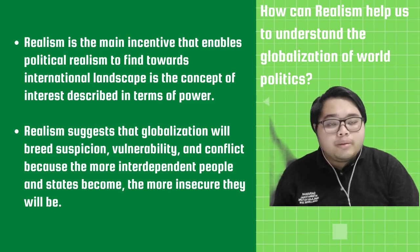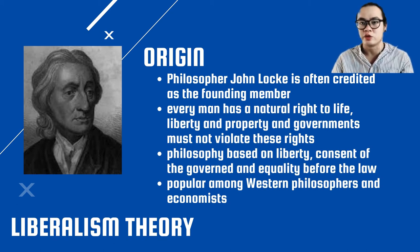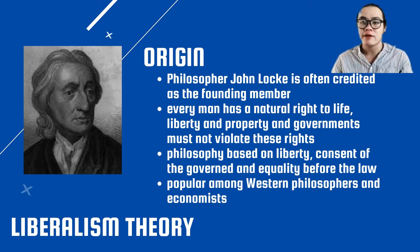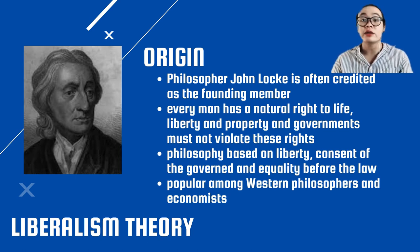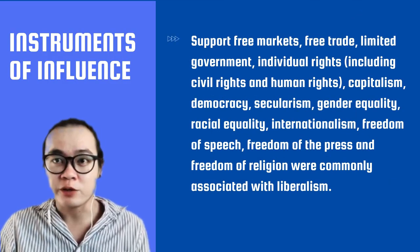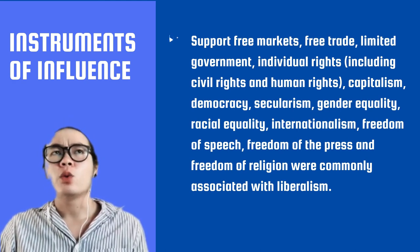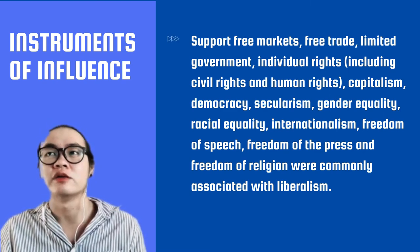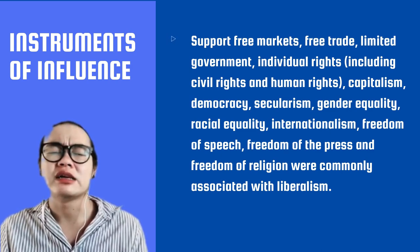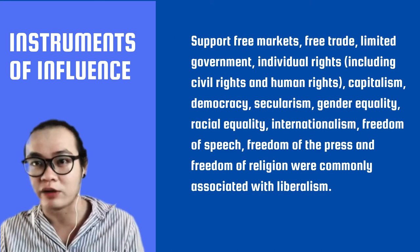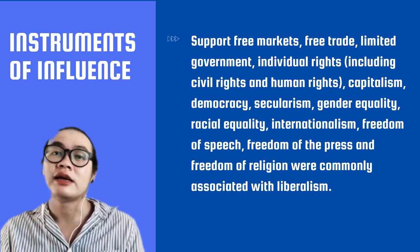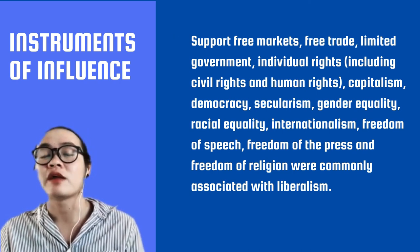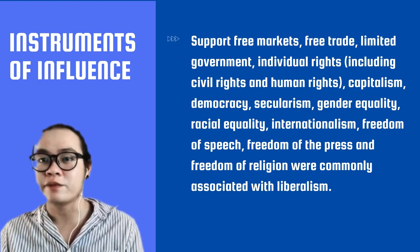The last theory is liberalism theory. Philosopher John Locke is often credited as its founding member. This theory holds that every man has a natural right to life, liberty, and property, and government must not violate these things. Philosophy based on liberty, consent of the governed, and equality before the law are very popular among western philosophers and economists. Its instruments of influence include supporting not only individuals but groups as well — for example, free trade, free markets, limited government — and individual rights supported by this theory include civil rights and human rights such as freedom of speech, freedom of the press, and freedom of religion.